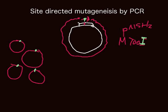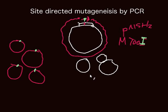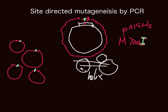We are also going to have the wild-type background plasmid also there. The wild-type is going to be a double-helix strand — a double helix — and the mutant one is a single-strand plasmid. There is one way to remove the double-helix plasmid using some kind of enzyme; we can remove all this from the solution.